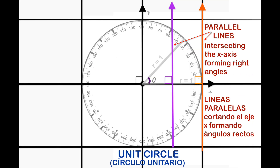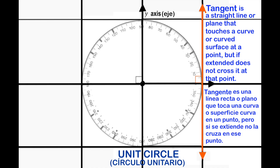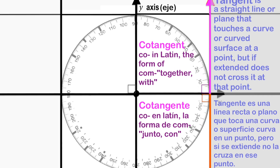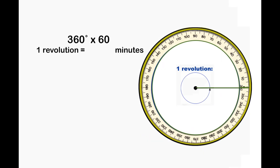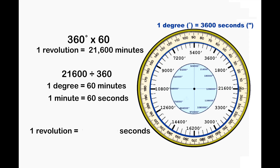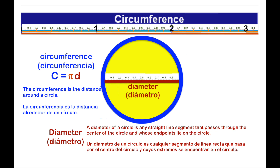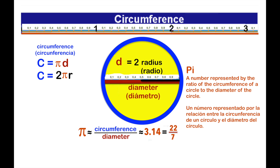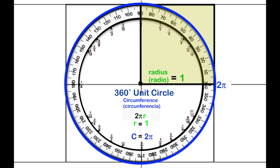Vertical lines that are parallel to each other form right angles. A line tangent to the circle, and the cotangent is a ray that comes together with another. One degree is equal to 60 minutes; one minute is equal to 60 seconds; one degree contains 3,600 seconds; and one revolution equals 1,296,000 seconds. The circumference is pi times diameter, or 2-pi times the radius.